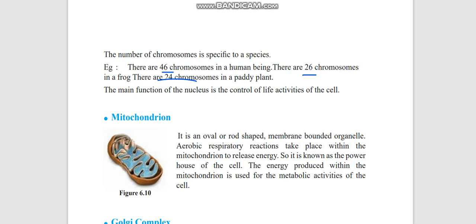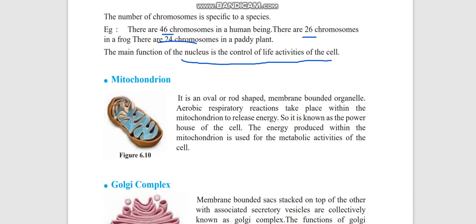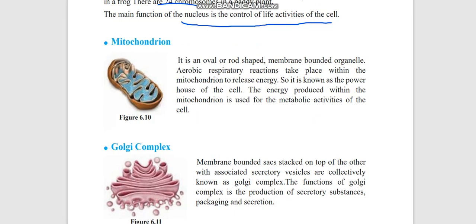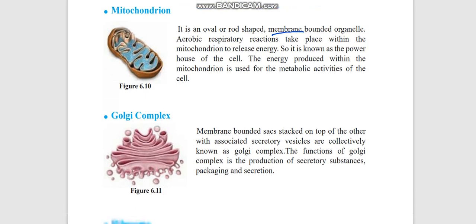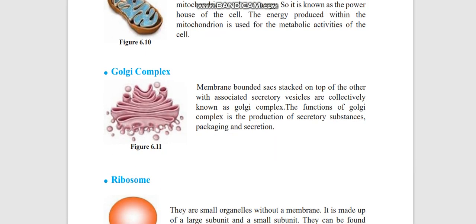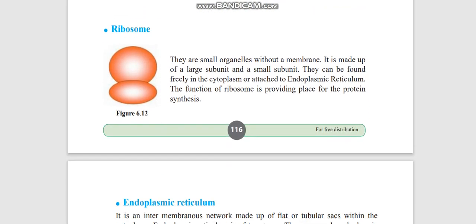Next we are coming to mitochondria. This is a membrane-bound organelle. Here only the energy is released to a cell, so we call it the powerhouse of the cell. It is used for the metabolic activities of the cell. Next one, Golgi complex also has a membrane. The function of it is production of secretory substances, packaging, and secretion.